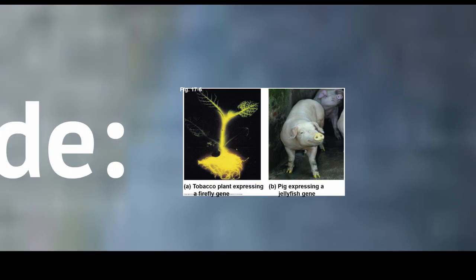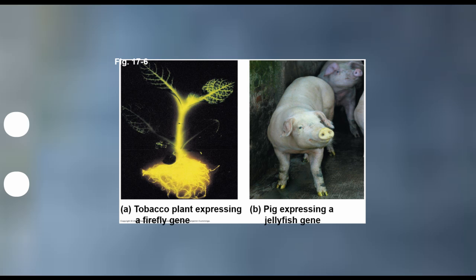I mentioned that this is a universal code, and I want to illustrate that with a couple of experiments. Fireflies have a gene for a protein called luciferin, which glows. Some researchers spliced out the firefly gene and inserted it into a tobacco plant — and now the tobacco plant is glowing. It is expressing that gene. Once a gene is in a cell, it doesn't matter who it came from; the cell can follow those directions, use its RNA polymerase, and build whatever protein it's coded for.